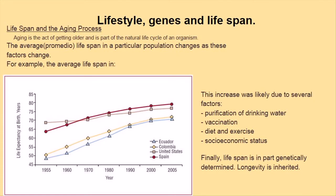Lifestyle, genes and lifespan. Aging is the act of getting older and is part of the natural life cycle of an organism. Lifespan and the aging process: the average lifespan in a particular population changes as these factors change. This increase was likely due to several factors: purification of drinking water, vaccination, diet and exercise, and socioeconomic status. Finally, lifespan is in part genetically determined. Longevity is inherited.